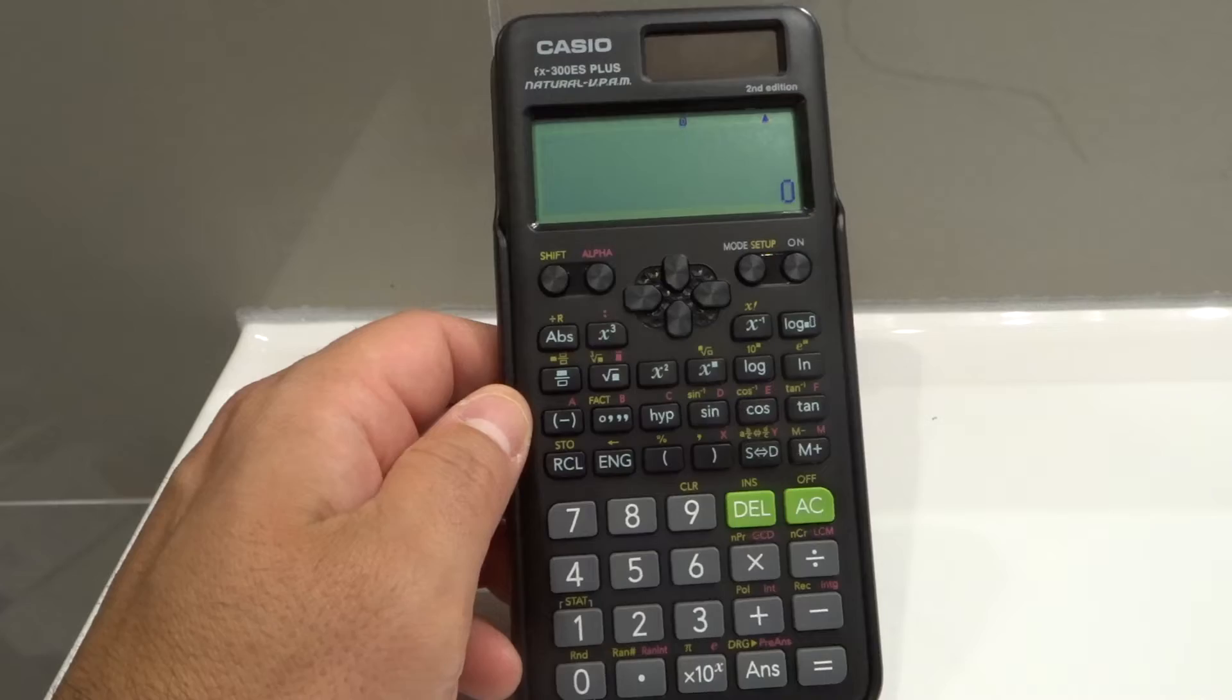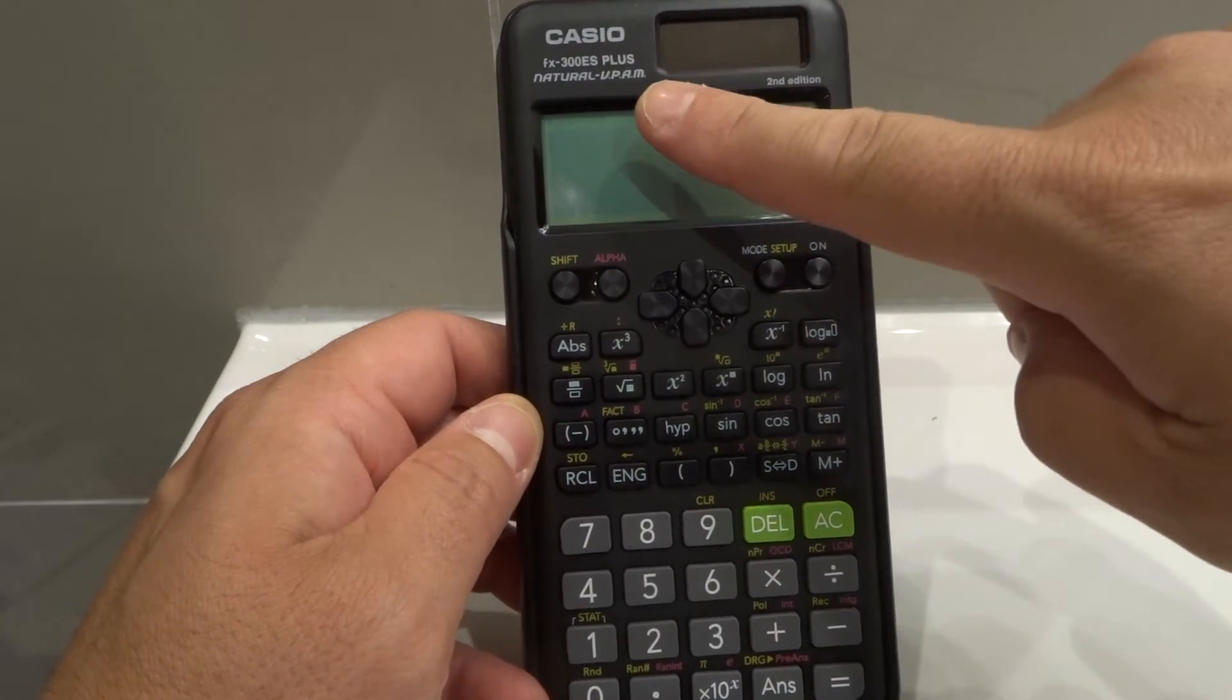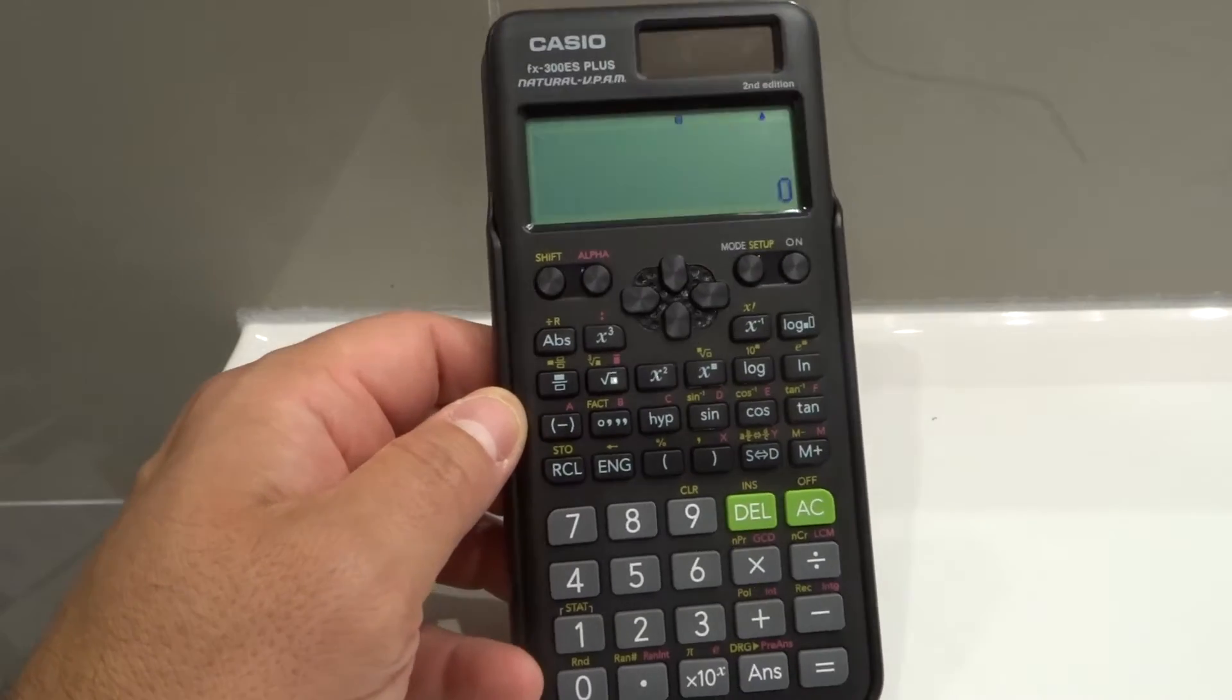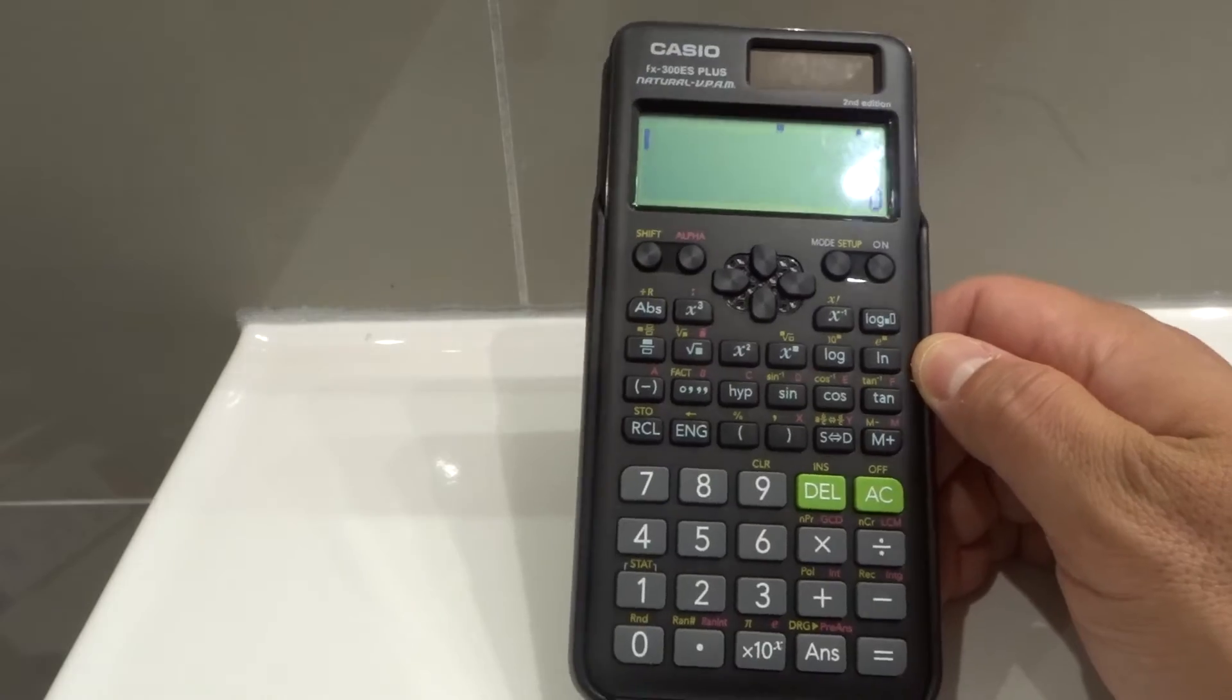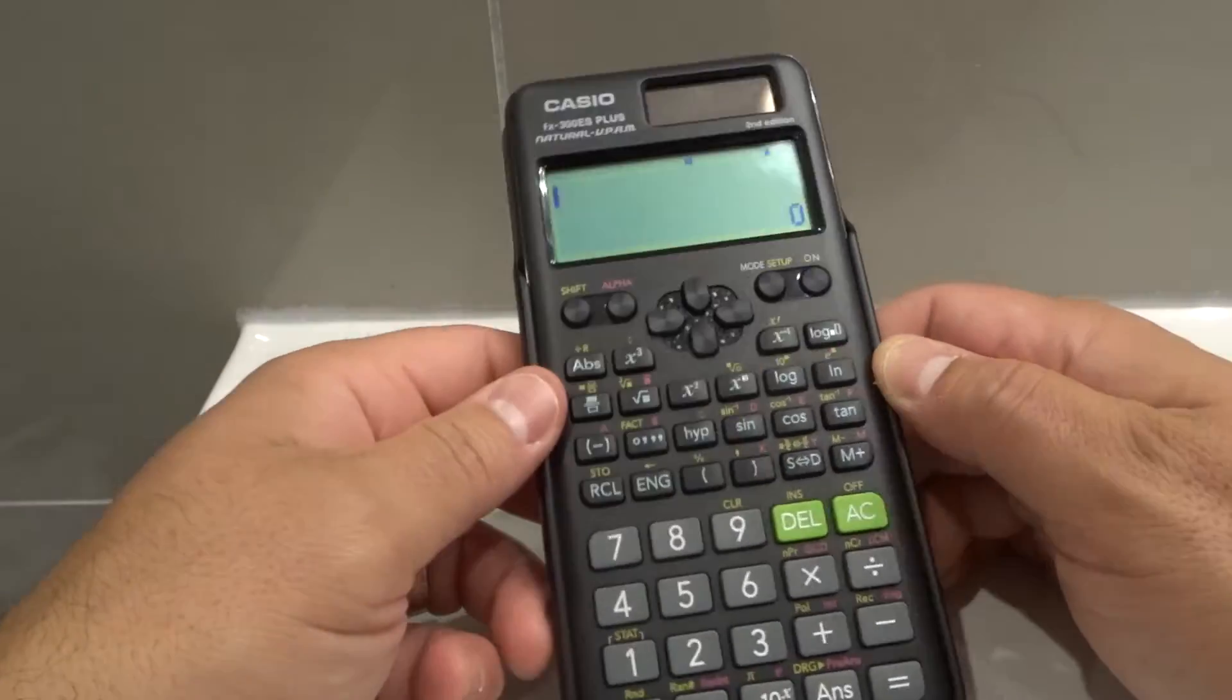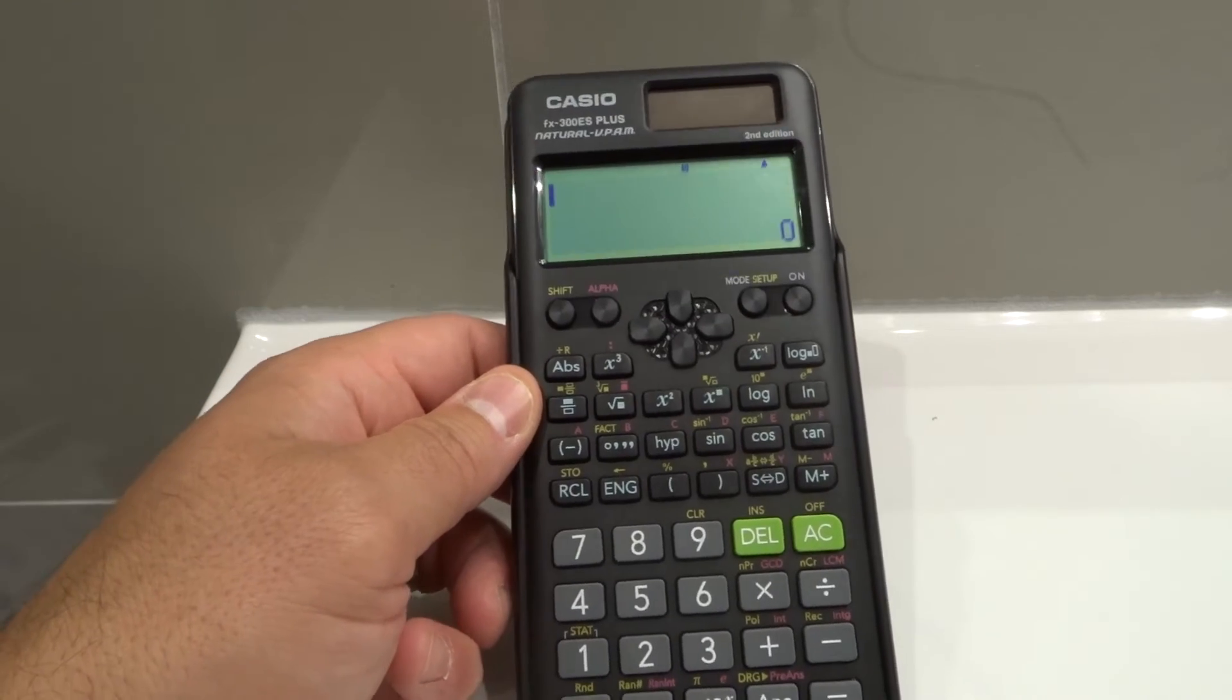That's how to adjust the contrast or the brightness on a Casio scientific calculator. This is the model of the calculator that I'm using. Yours might be slightly different, but the process is going to be very similar. So you can probably take these instructions and use them directly. If not, just slightly change them to make sense with your own specific scientific calculator keypad.